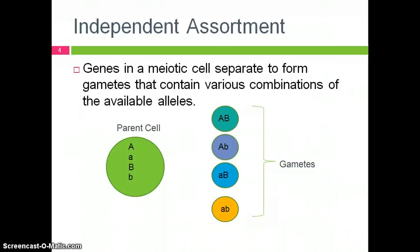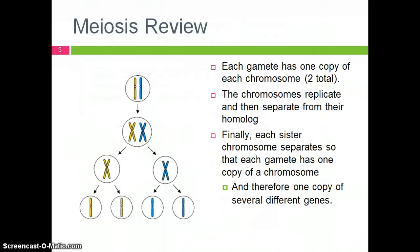This dividing up of the genes occurs during meiosis. Meiosis is the cell division that occurs in order to prepare cells for reproduction. Each gamete in this body contains two copies of each chromosome. During meiosis, these chromosomes will replicate and then separate from their homolog. Finally, the sisters will each separate so that you are left with four cells, each with one chromosome in it.